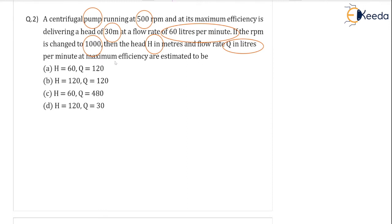So first of all, let me write down the given data for the centrifugal pump. A centrifugal pump running at 500 rpm, N1 is given 500 rpm. And at its maximum efficiency is delivering a head of 30 meter. So your head is 30 meter at a flow rate of 60 liters per minute. Discharge is given 60 liters per minute.